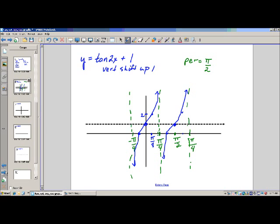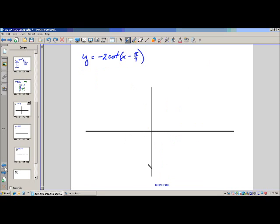Alright, going on to the next graph. We have cotangent, negative 2 cotangent of x minus pi over 4. This time we have a phase shift.